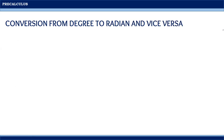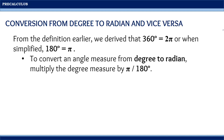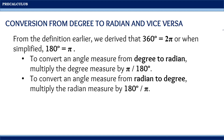Now let us discuss how to convert angles in degrees to radians and vice versa. From the definition, we derived that 360 degrees is equal to 2π, or when simplified, 180 degrees is equal to π. To convert an angle measure from degree to radian, multiply the degree measure by π over 180 degrees. To convert from radian to degree, multiply the radian measure by 180 degrees over π.